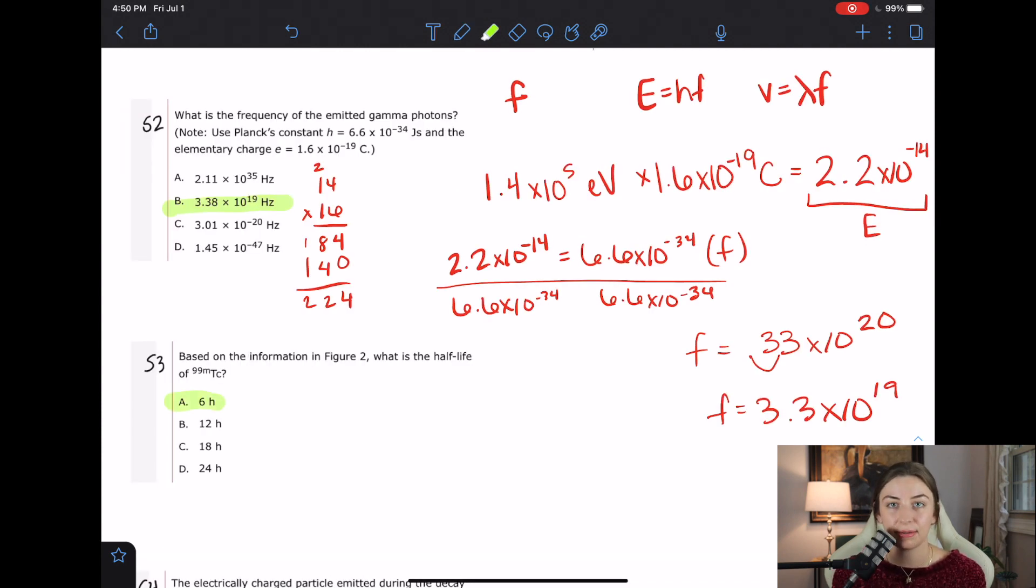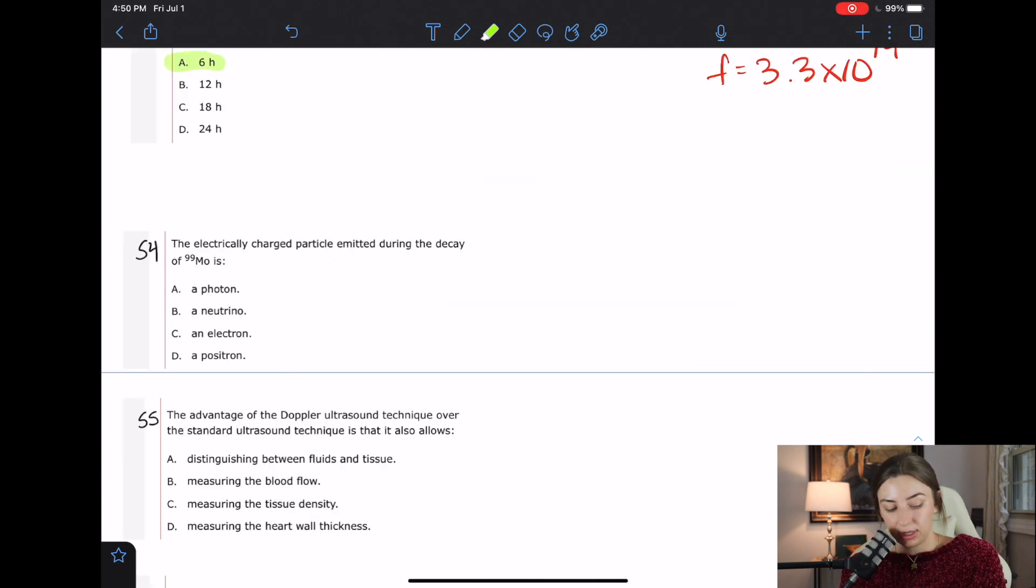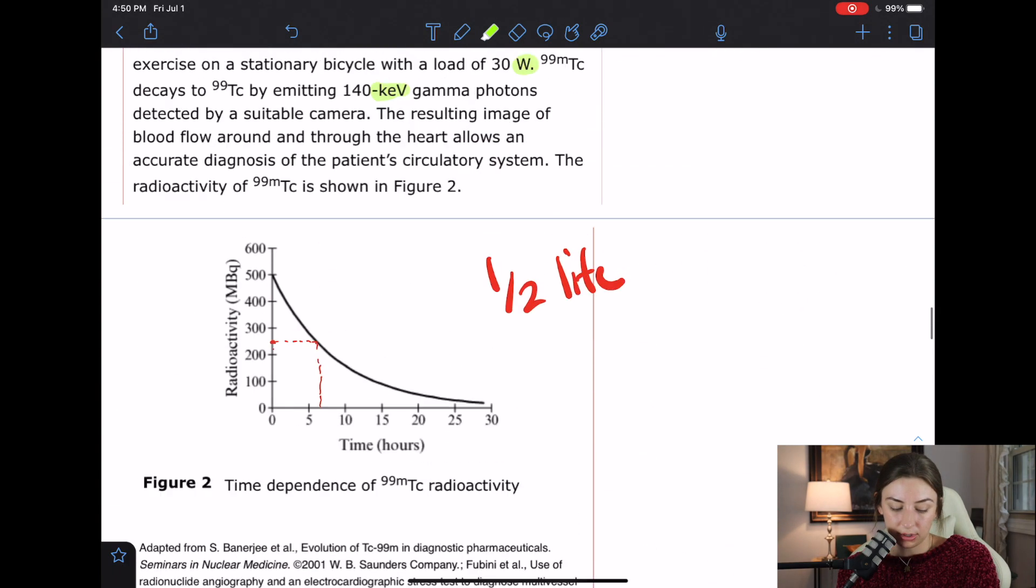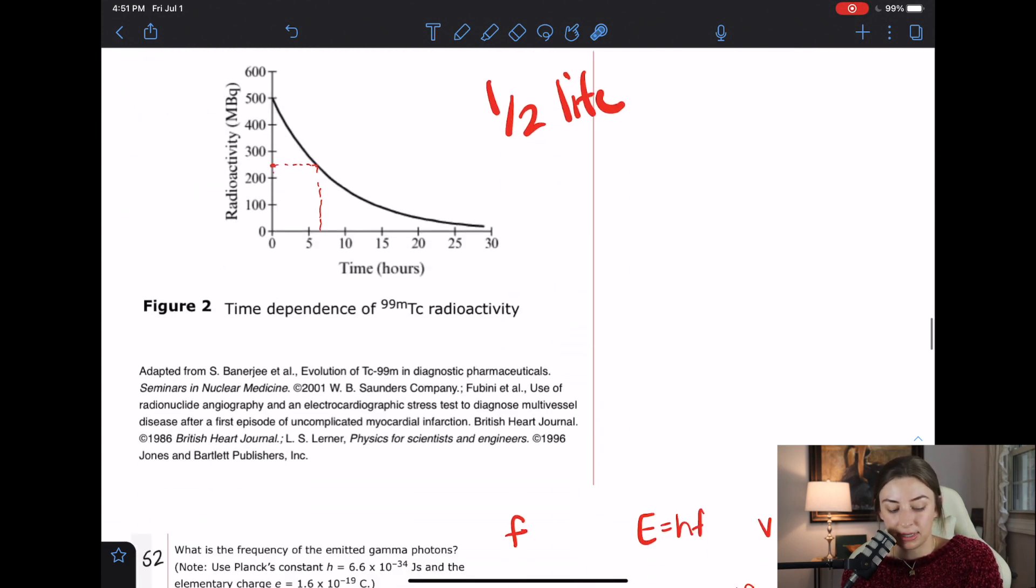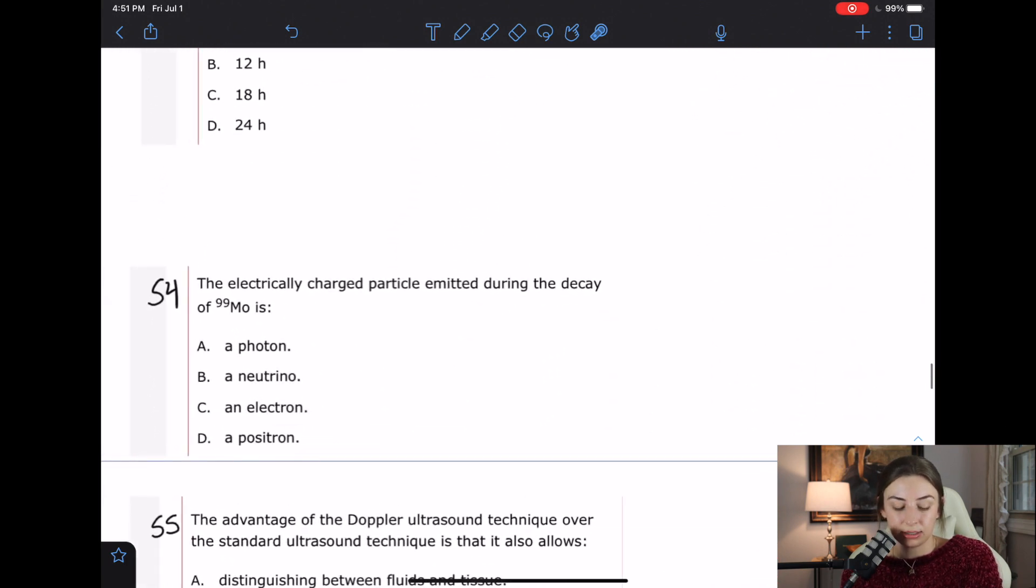So they throw you a bone after they make you do all that math in 52. Question 54, the electrically charged particle emitted during the decay of 99 MO is... So let's go back up to the passage because I kind of forgot what it said about the decay of 99 MO. Okay, right here it says it decays releasing a beta particle B minus. Okay, right there. So we know that it's beta decay, but there's a few different types of beta decay. But right here is our hint that it is beta minus decay, in which case it's a basic science to know that the particle released in beta minus decay is an electron.